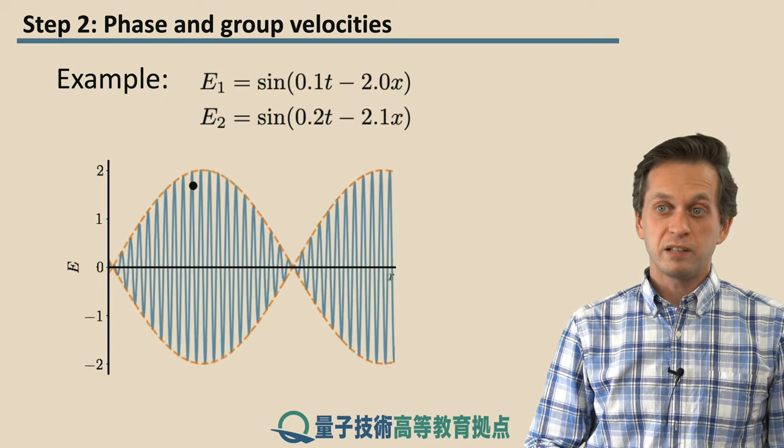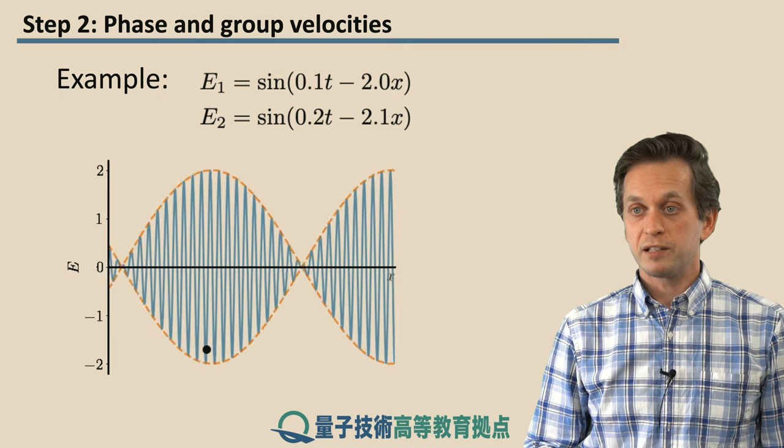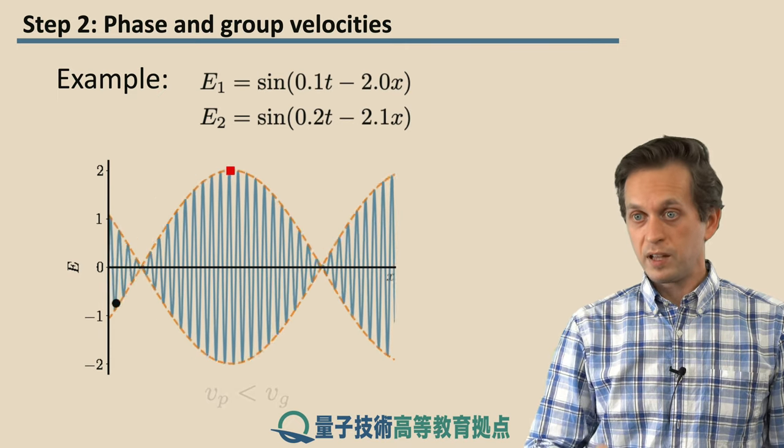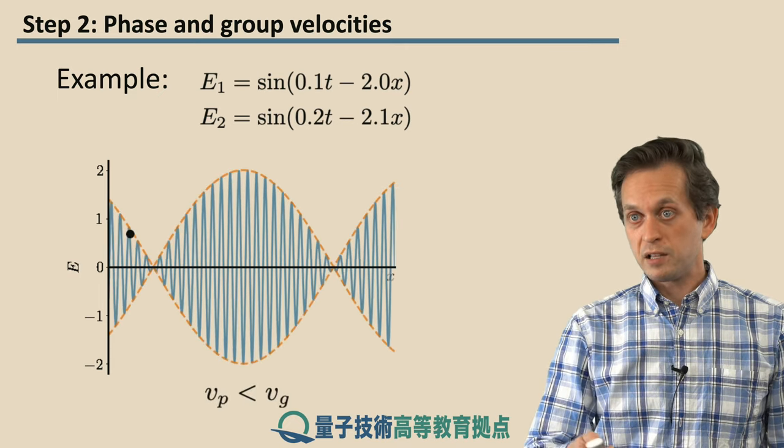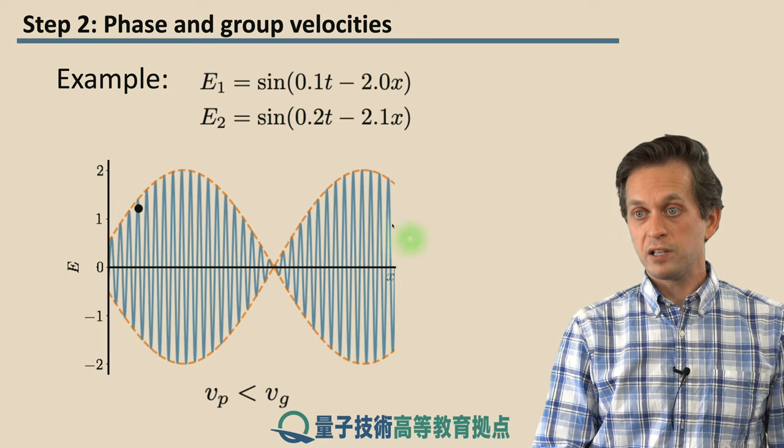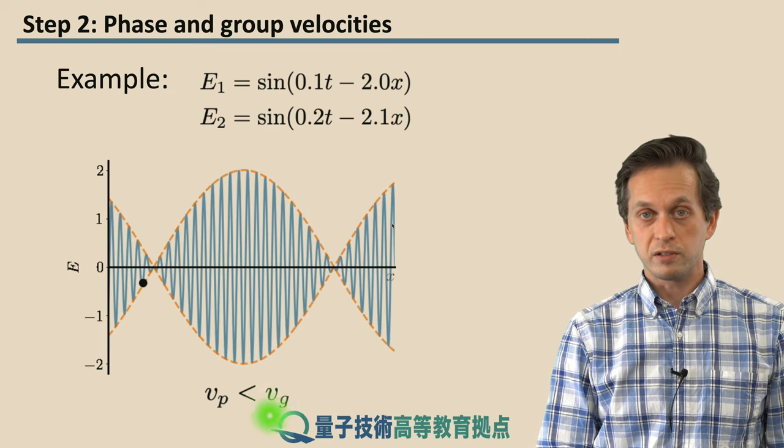Well, you can actually see that it's 14 times faster, but mathematically that's true. And as we said, in this case that we picked, the phase velocity is smaller than the group velocity.